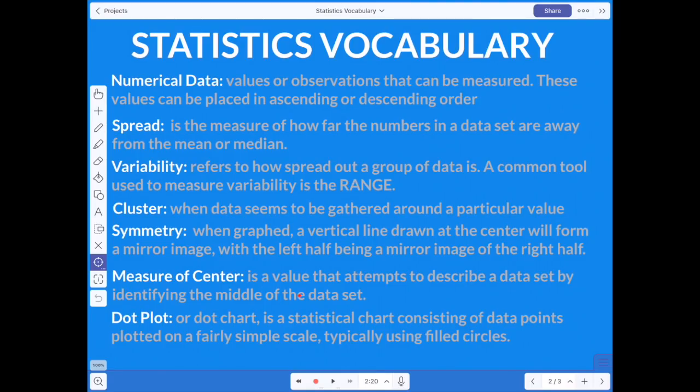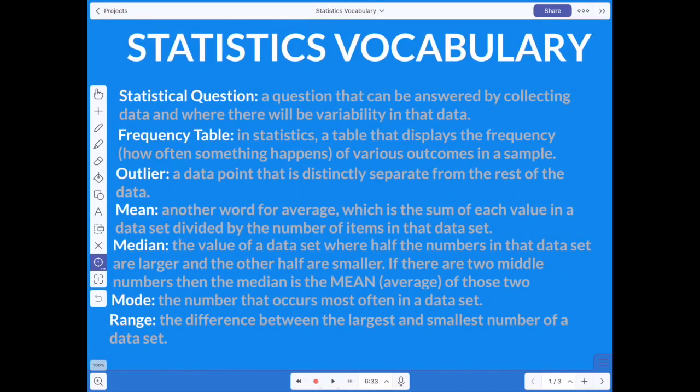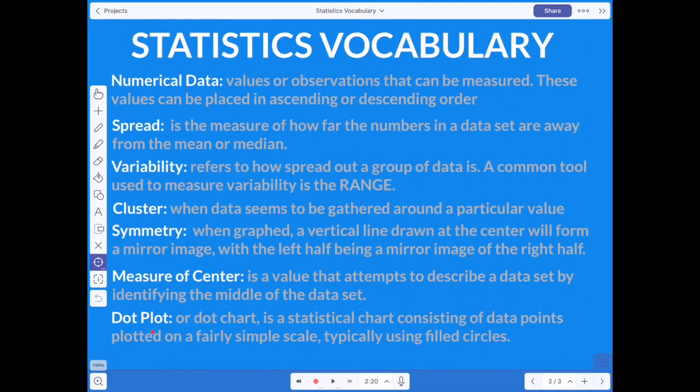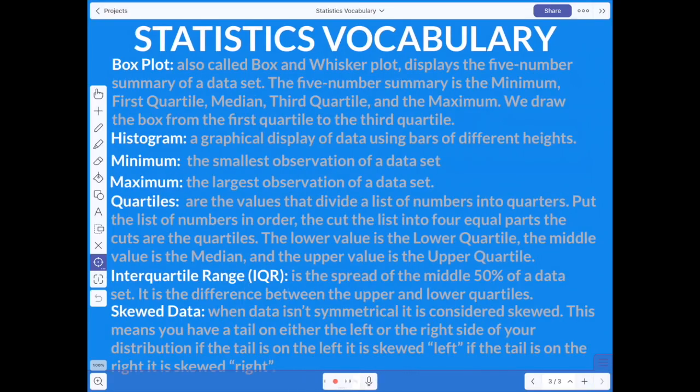A measure of center is a value that attempts to describe a data set by identifying the middle of the data set. So measures of center that we're going to be using, I think I already talked about them. Mean, median, mode, all these are measures of center. Now we're going to start talking about the different types of displays. A dot plot or a dot chart is a statistical chart consisting of data points plotted on a fairly simple scale, typically using filled circles. You may already be familiar with these. You may have used these before. But we will definitely make some of these.